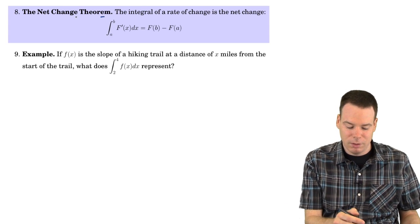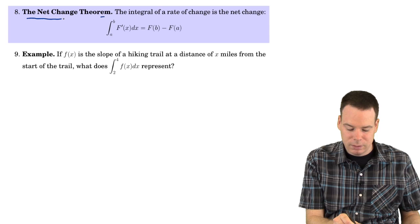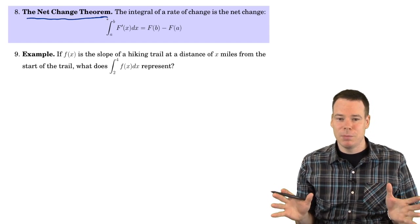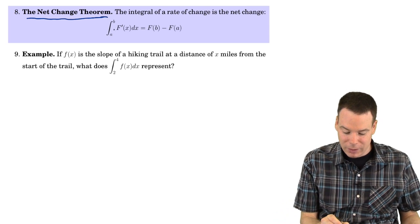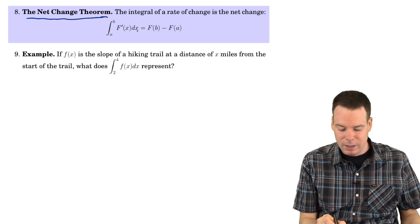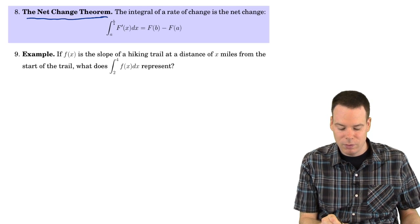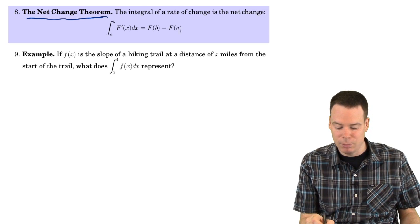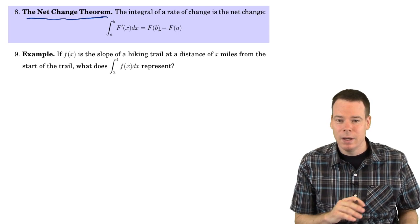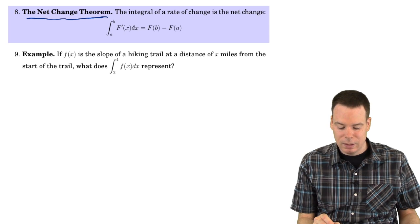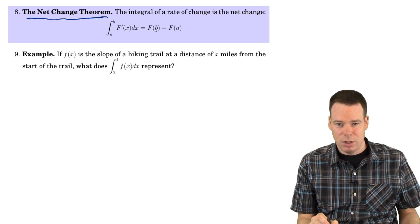Now I just want to look at a restatement of the fundamental theorem of calculus as it's often used in applications in engineering and science. This is the net change theorem — really just a restatement of the fundamental theorem of calculus part 2. The integral from a to b of F'(x) dx: the anti-derivative of F' is F, so we evaluate F at the endpoints and take their difference. We call it the net change theorem because if you take the integral of a rate of change, you get the net change in the function.